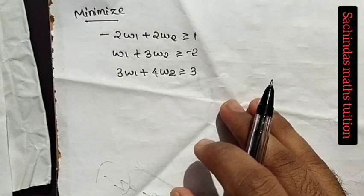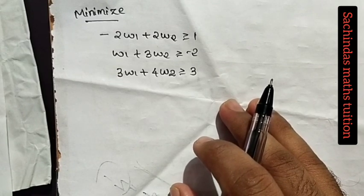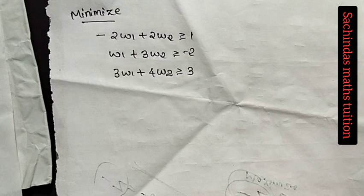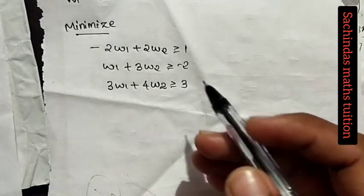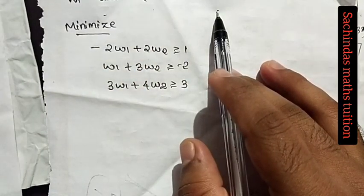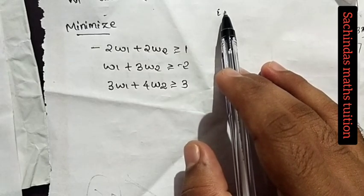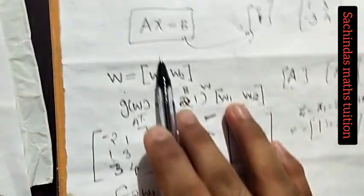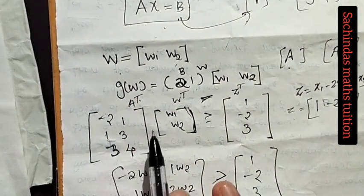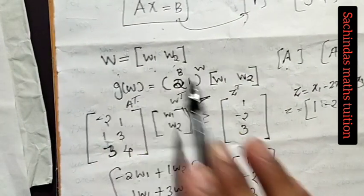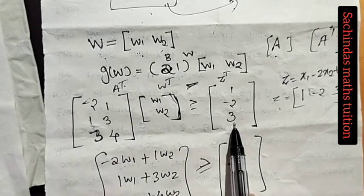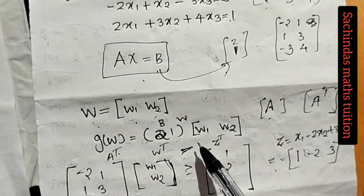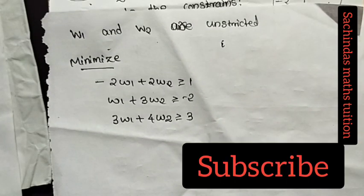Greater than 1, minus 3. That is the dual: minimize W. The dual objective is to minimize W, where W equals W and Z equals Z. A transpose times W transpose is greater than or equal to Z transpose. We are going to minimize the answer. W is unrestricted. This is all dual and clear.